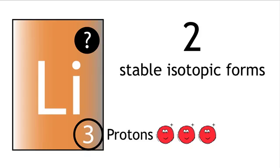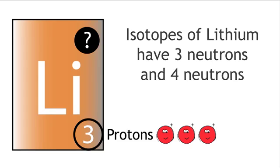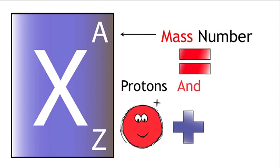The isotopes of lithium have three neutrons and four neutrons respectively. How do we calculate each of the isotopes' mass numbers? Remember, mass number equals number of protons plus number of neutrons.